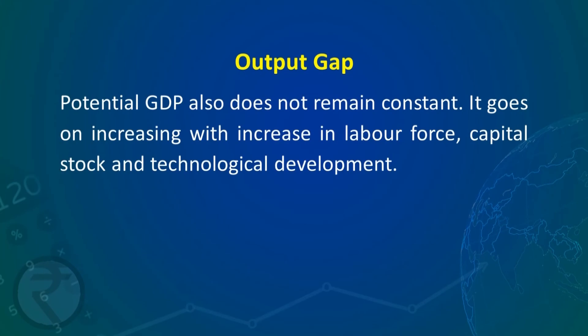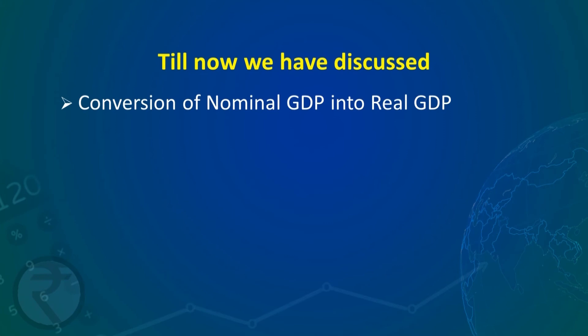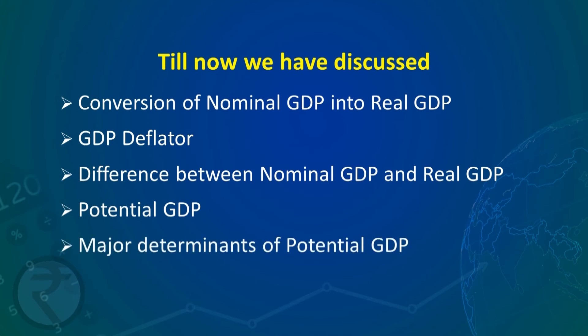Potential GDP also does not remain constant — with increases in labour force, capital stock, and technological development, it goes on increasing. Till now we have discussed conversion of nominal GDP into real GDP, GDP deflator, the difference between nominal GDP and real GDP, potential GDP, major determinants of potential GDP, and the output gap.